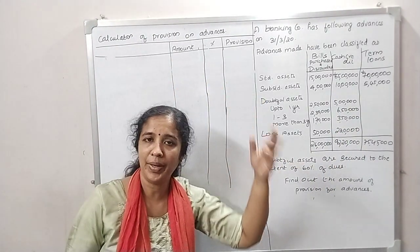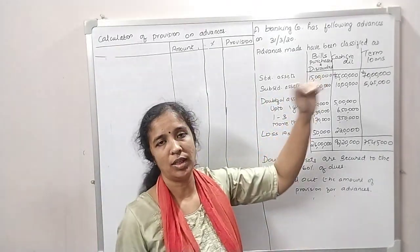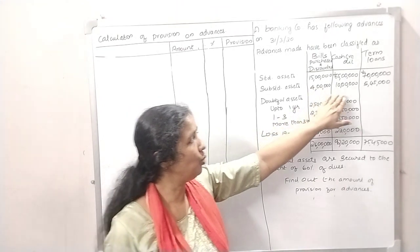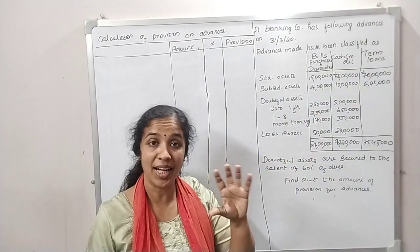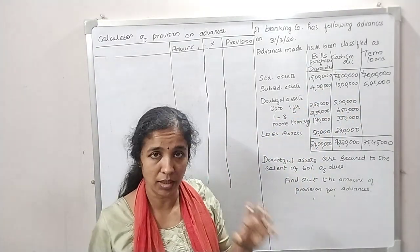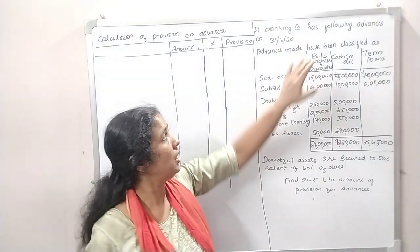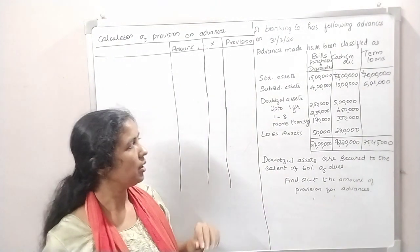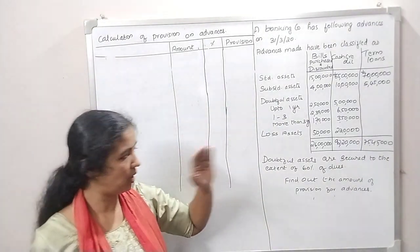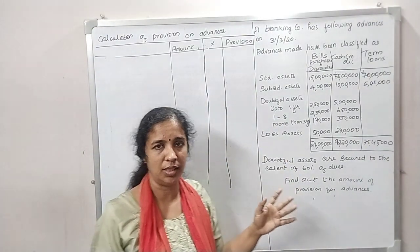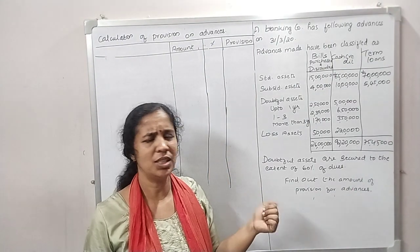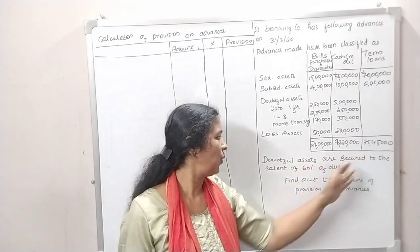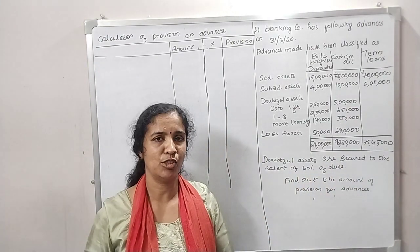This is the standard assets. We have 3 total assets. If we have 3 substandard assets, we have 3 substandard assets in banking. In 2020, we have 3 total assets. We also have doubtful and loss assets, and we have 3 substandard assets.